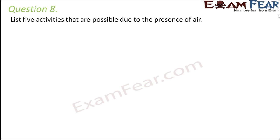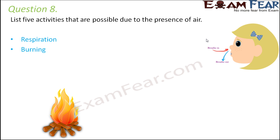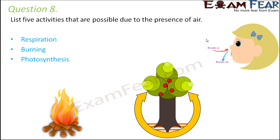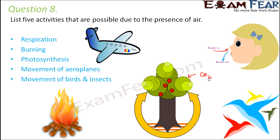Question number eight: list five activities that are possible due to the presence of air. Respiration — we breathe in oxygen, so we need air. Burning — as soon as you cover a candle it goes off, so burning cannot happen without air. Photosynthesis — plants need carbon dioxide from the air. Movement of aeroplanes — without air, planes can't move. Movement of birds and insects — they can fly only when air is present.